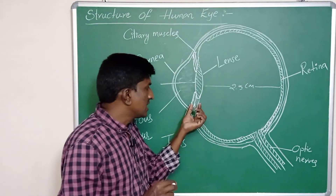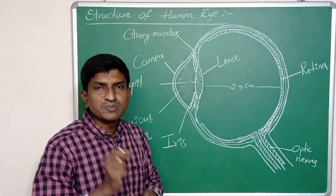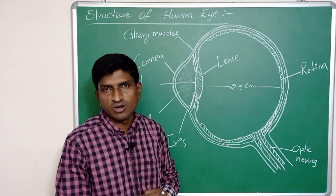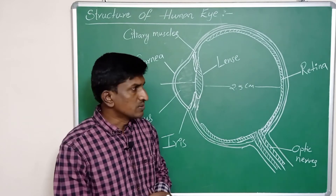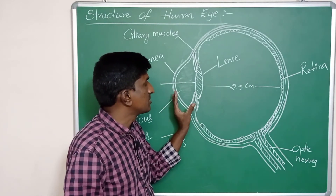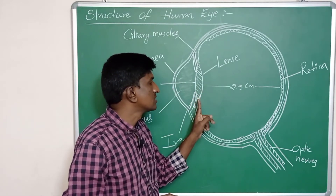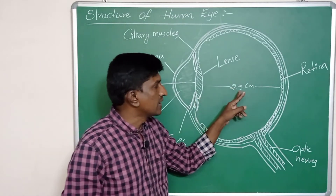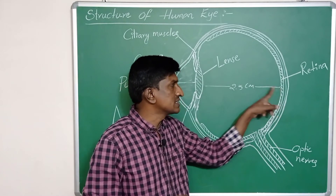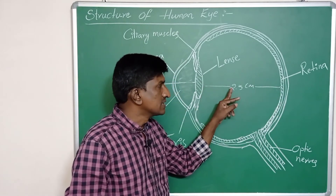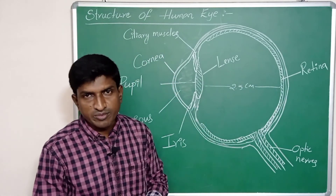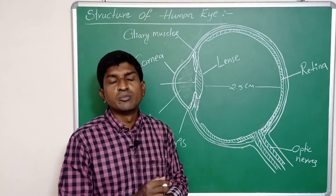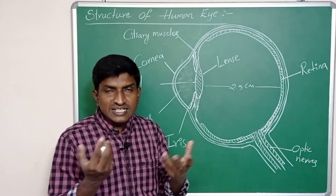The changing of focal length takes place up to a certain limit; beyond that limit it is not possible. In this way the ciliary muscles help the eye lens change its focal length so that the image distance from the eye lens is always 2.5 centimeters.